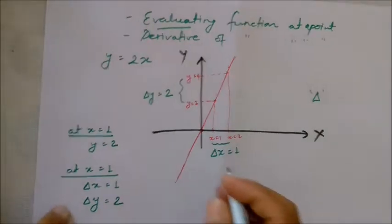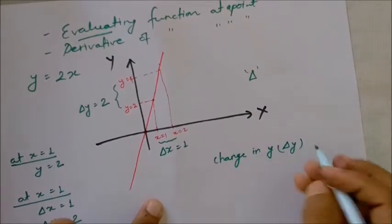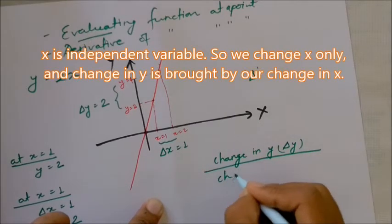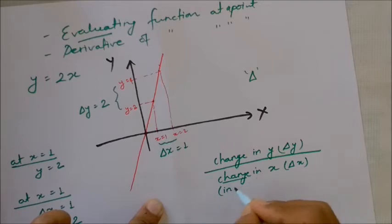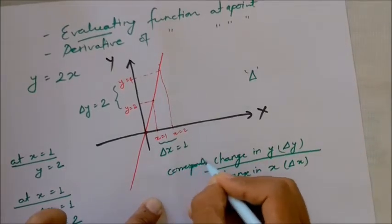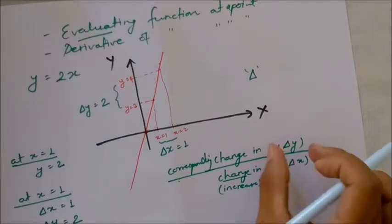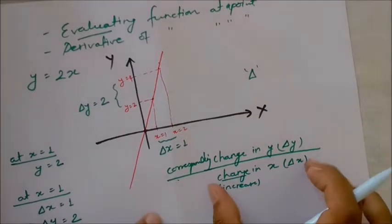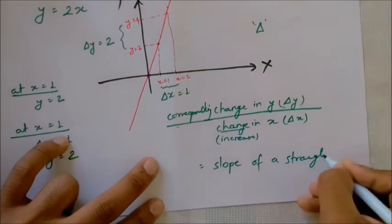Change in y. Delta y — how do you compute it? Change in x and change in y: this is the corresponding change in x. As x increases, y increases correspondingly. The derivative is change in y divided by change in x. This is the same as the slope of a straight line.